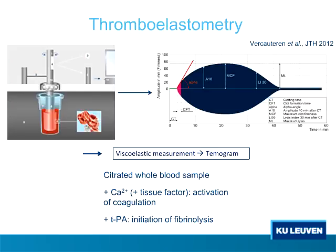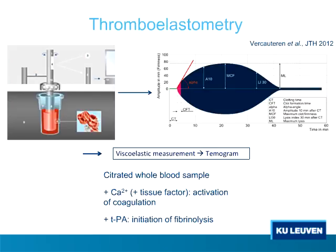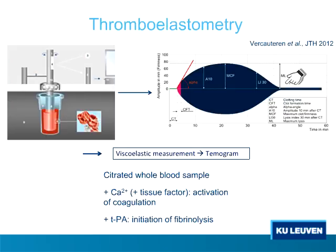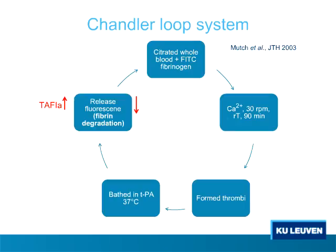Another way to test TAFI inhibitors is thromboelastometry, using citrated whole blood with added calcium. We always use a small amount of tissue factor to activate coagulation and TPA to induce fibrinolysis. Viscoelasticity is measured, and the typical thromboelastogram shows the alpha angle representing rate of clot formation, and the maximum lysis representing fibrinolysis. Another method is the chandler loop system, also using citrated whole blood with labeled fibrinogen. The blood is rotated to form little thrombi, which are then placed in a TPA solution and fluorescence release is measured — the more TAFI-A present, the less fluorescence is released.